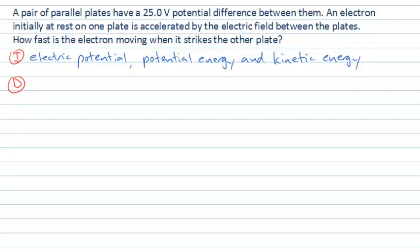Let's start with a picture, a diagram of the situation to help us understand what's going on. Here are our parallel plates mentioned in the question and they have some potential difference between them. And there's an electron that's initially at rest on one of the plates and it gets accelerated across to the other plate and we want to know how fast it's moving as it strikes that other plate.